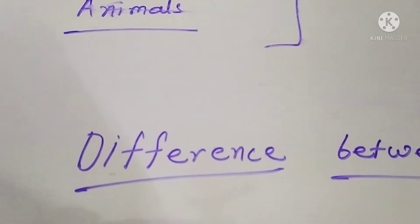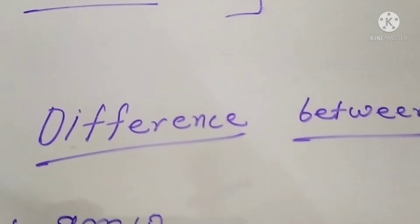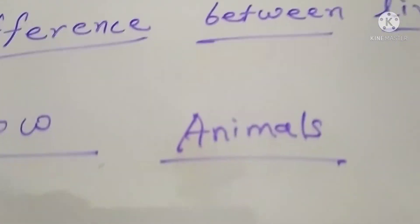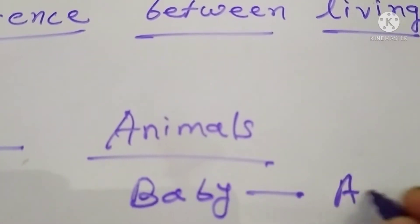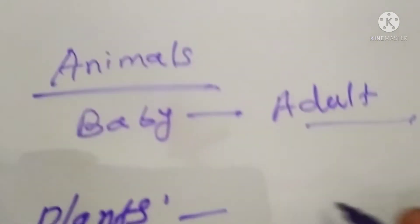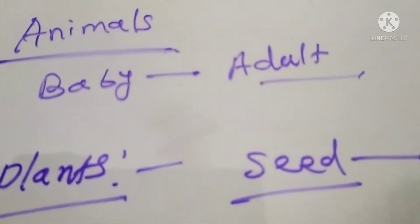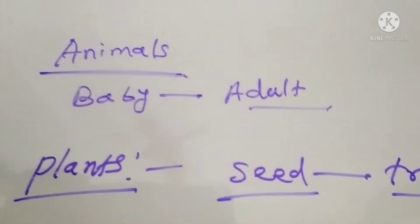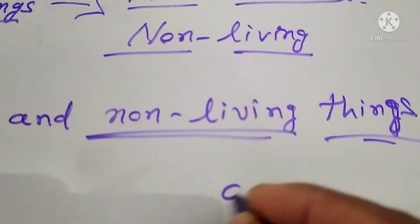Now we see the difference between living and non-living things. Living things grow. Animals have babies — young ones — which become adults. Seeds from plants become a big tree. So living things grow, while non-living things do not grow.